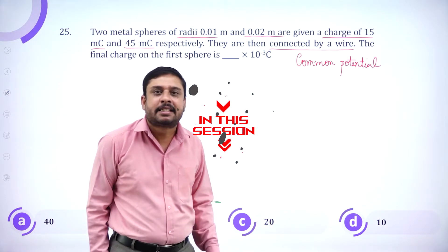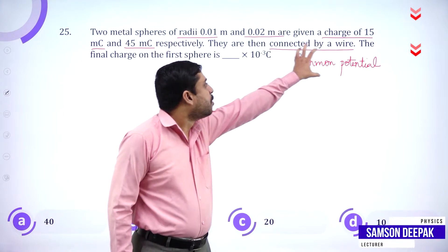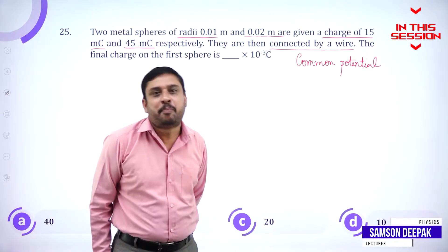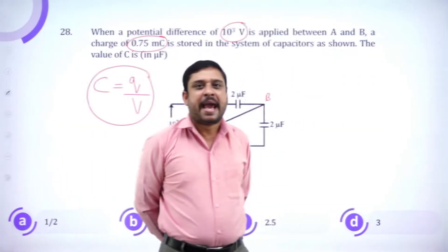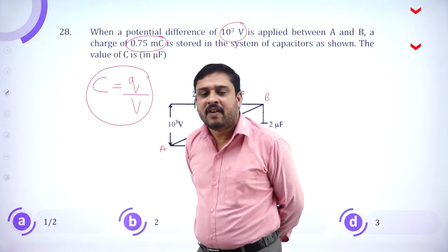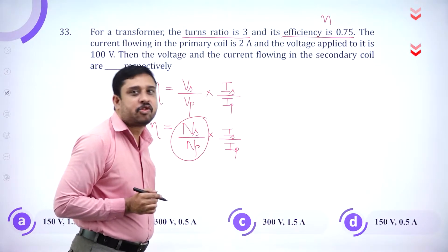Two spheres connected by a same wire, that means both of them will have a common potential. Basic definition of capacitance, Q divided by V, Ns divided by Np, it is in terms ratio.